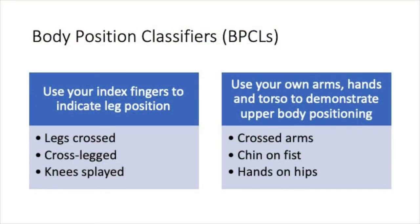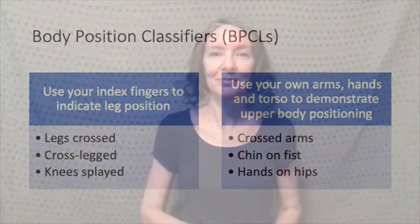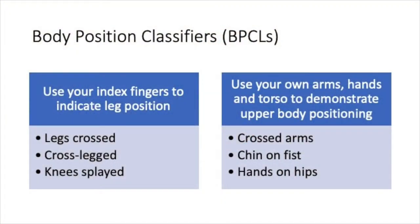We use classifiers to indicate the position or movement of someone's legs. These are called body position or body part classifiers. Use your index finger as a stand-in for legs. Show legs crossed, crossed at the knees, knees splayed apart, or one leg bent and resting on the other. For upper body positioning, use your arms, hands, and torso to mimic the person you are describing.